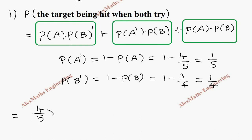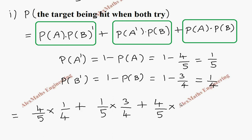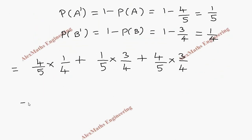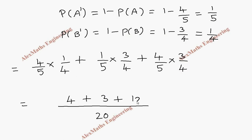Now substituting: P(A) × P(B') = 4/5 × 1/4, plus P(A') × P(B) = 1/5 × 3/4, plus P(A) × P(B) = 4/5 × 3/4. The common denominator is 5 × 4 = 20. The numerator: 4×1 = 4, 1×3 = 3, 4×3 = 12. Adding these gives 4 + 3 + 12 = 19 by 20.